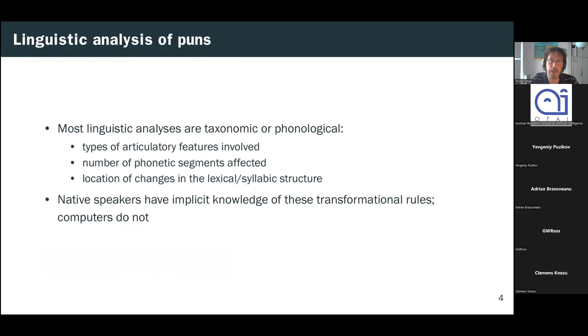So punning is actually one of the most studied phenomena in the linguistics of humor. And most linguistic analyses of puns to date have been taxonomic or phonological. These studies describe the permissible and preferential sound transformations between the pun and its target in terms of things like the types of articulatory features or the number of segments that are affected or their positions in the lexical or syllabic structure, that sort of thing. And even though native speakers have implicit knowledge of these transformational rules, otherwise we wouldn't get punning humor, they must be learned or explicitly modeled in computational applications if they want to be able to process puns.